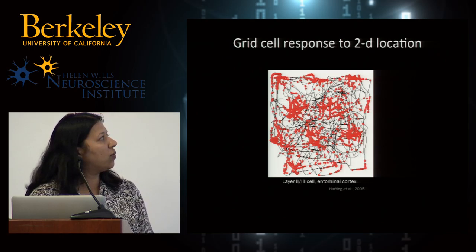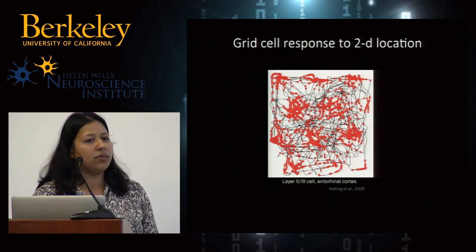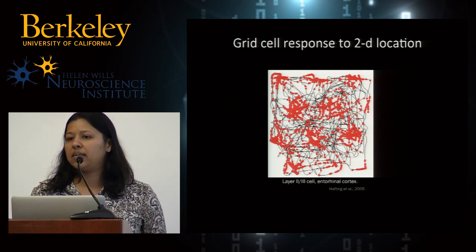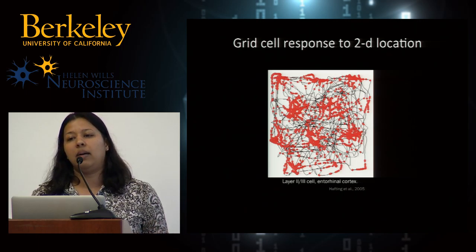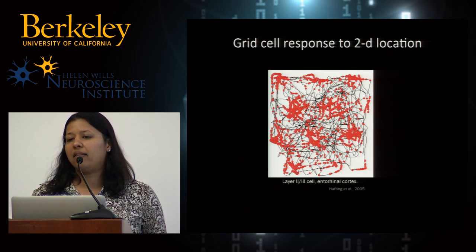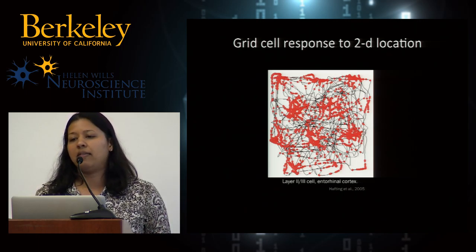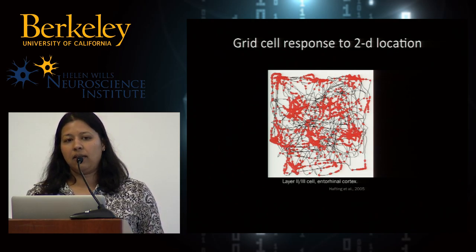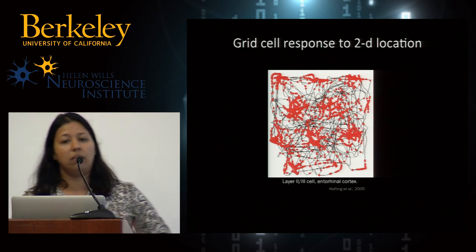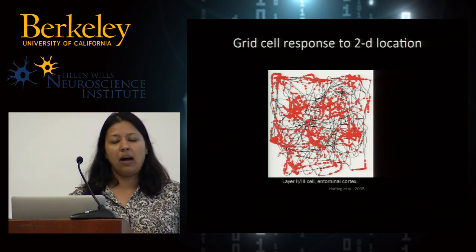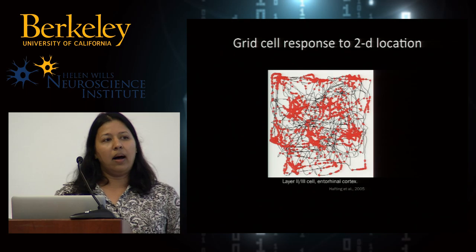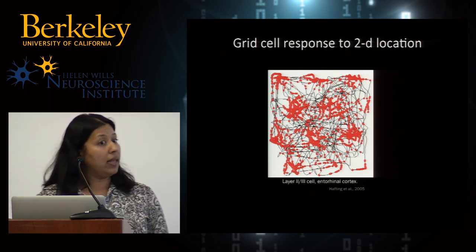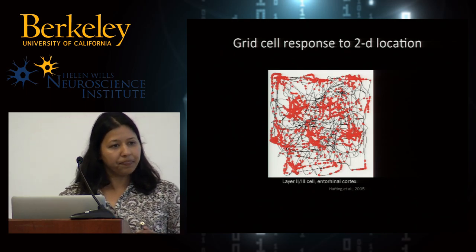This is a cell in layer 2-3 of the entorhinal cortex. It was discovered in rats, but there's evidence it exists in bats, mice, and probably humans as well. So this is likely a general mammalian system, and the firing of the cell is clearly related to some encoding of space.